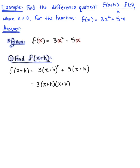With our second term, we can take this 5 and distribute it through to both terms in that binomial. So this will become plus 5x plus 5h.